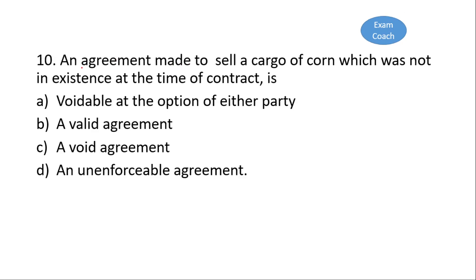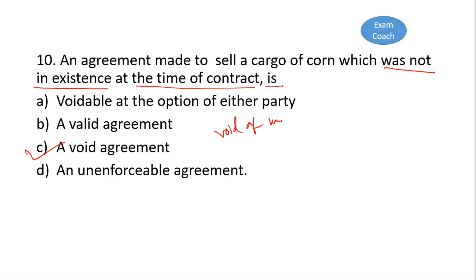Our last question: an agreement made to sell a cargo of corn whose subject matter was not in existence at the time of the contract — that agreement will be a void agreement. An agreement where the subject matter does not exist at the time of the agreement is void. They are void for uncertainty.